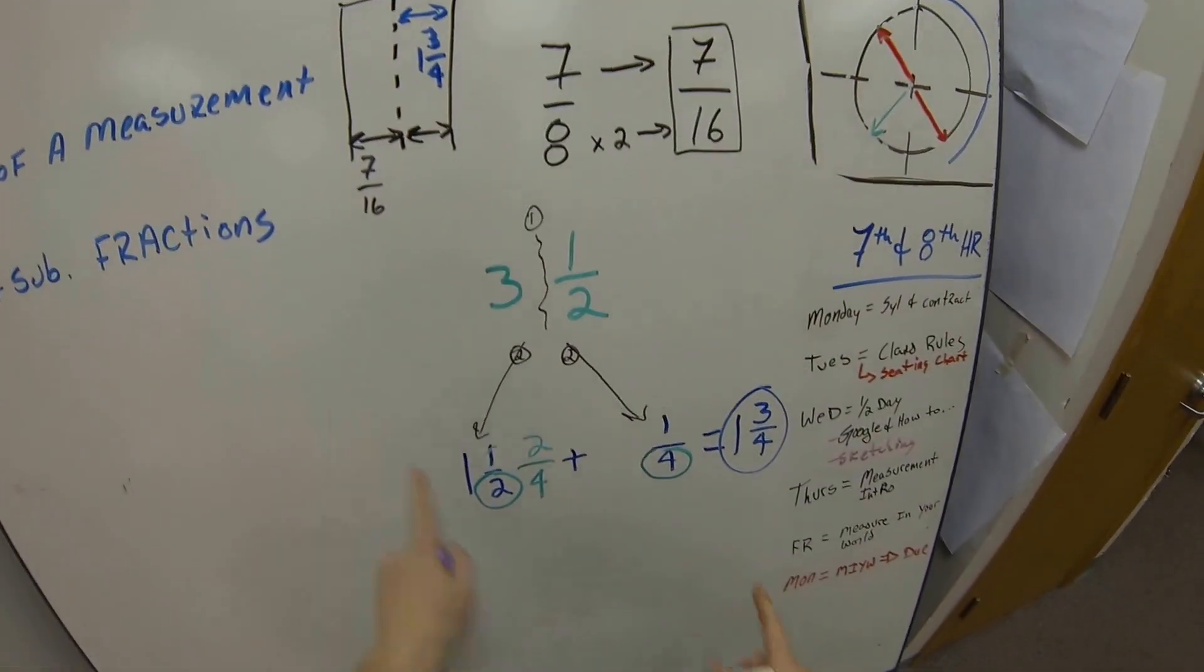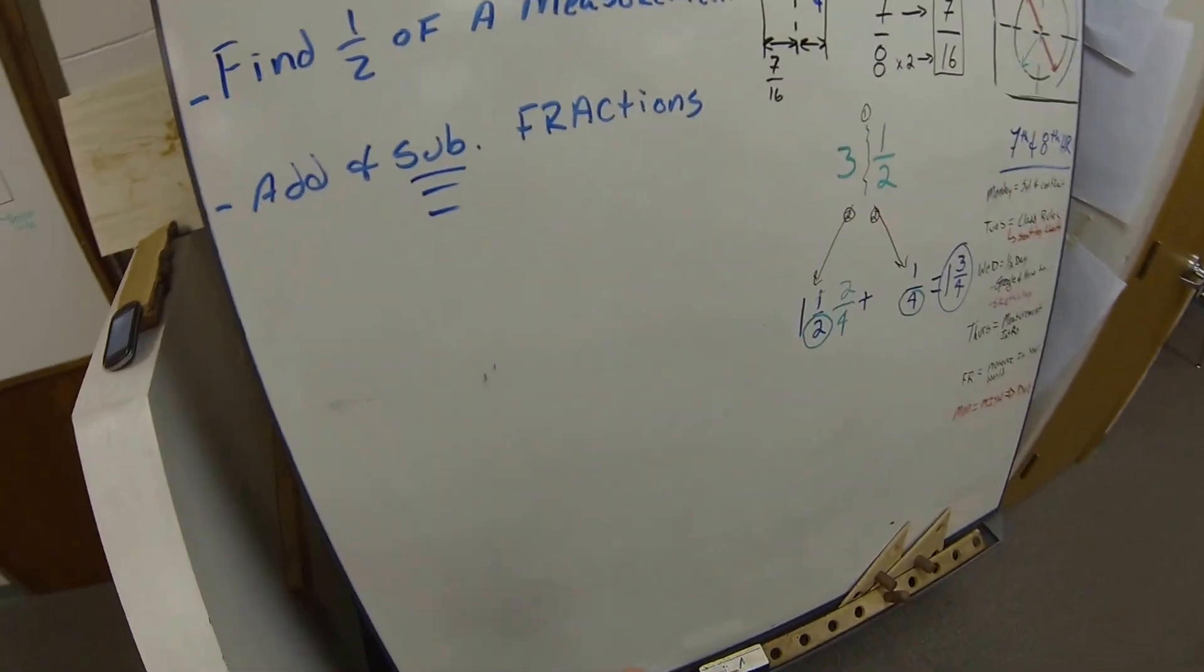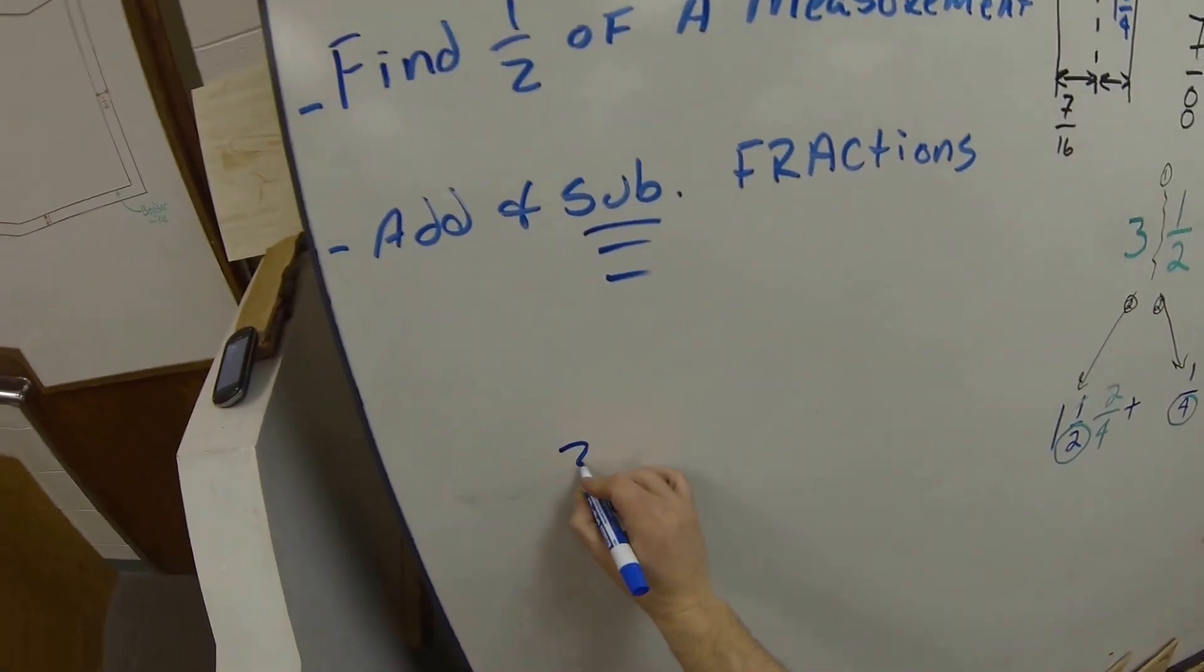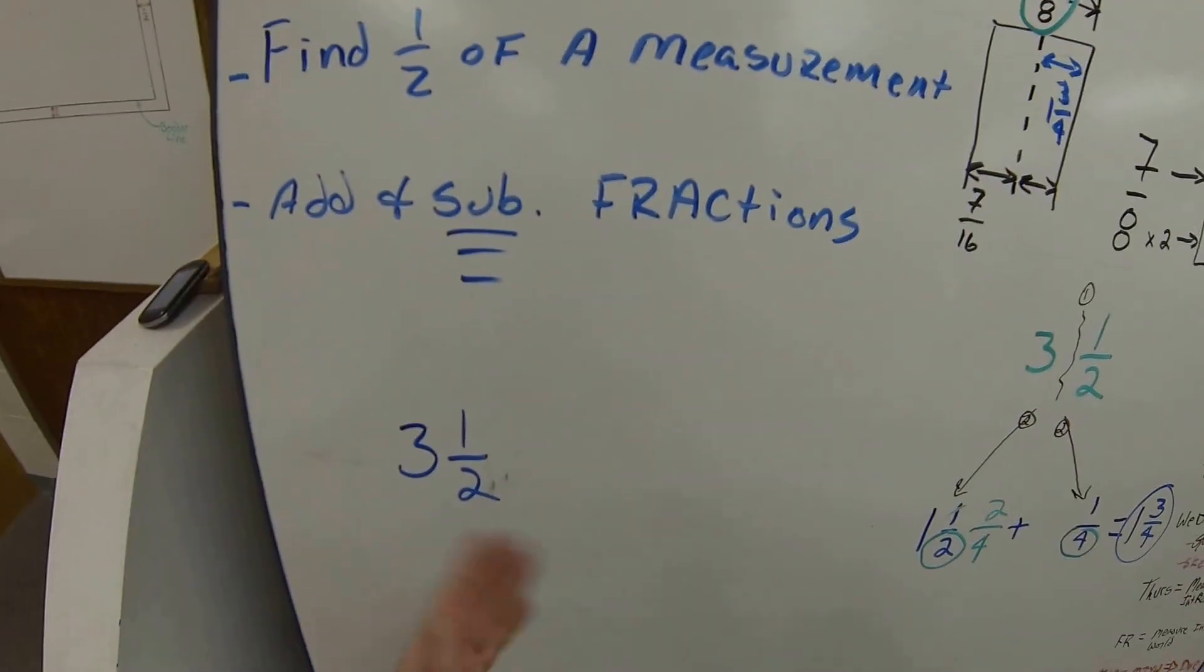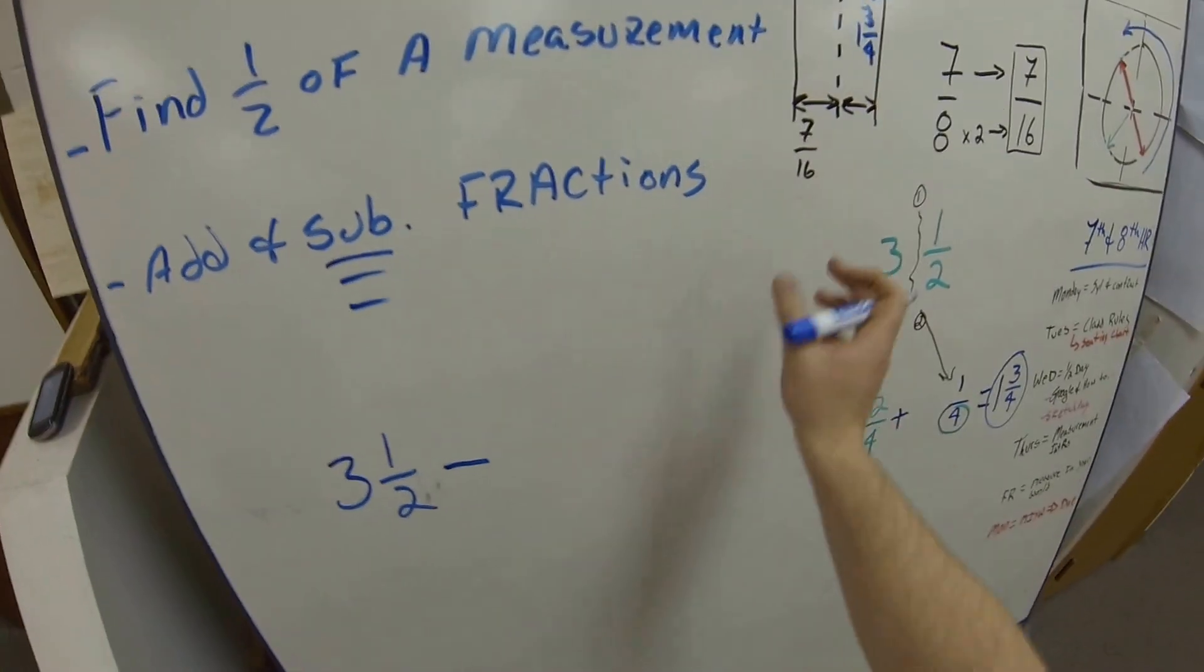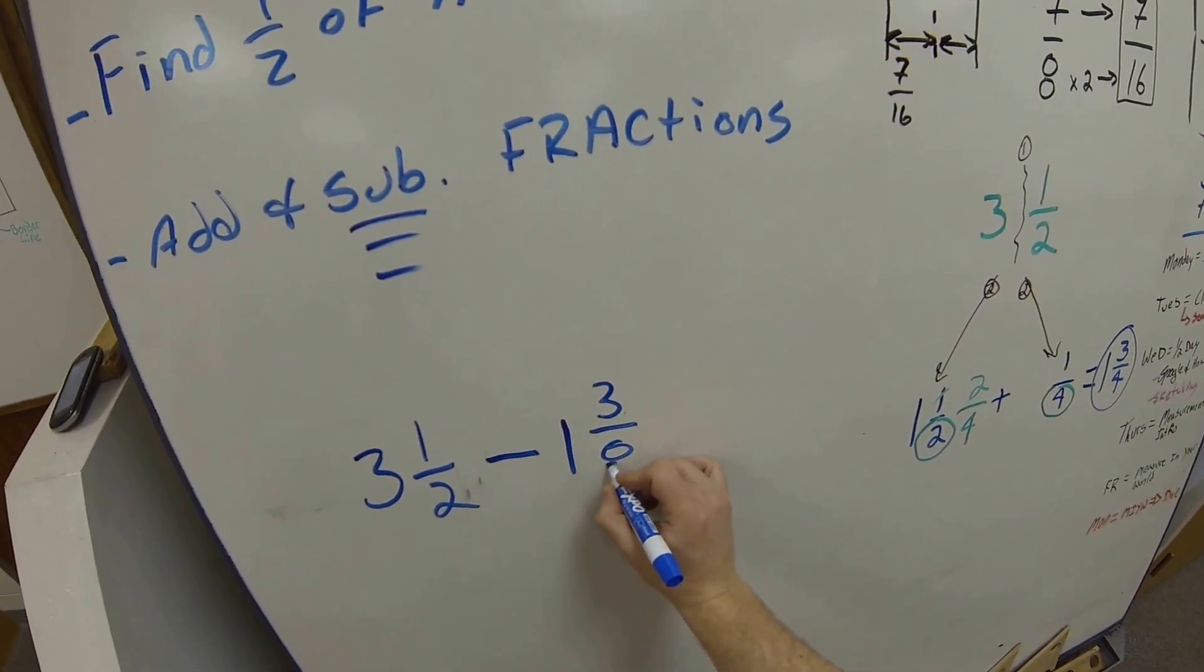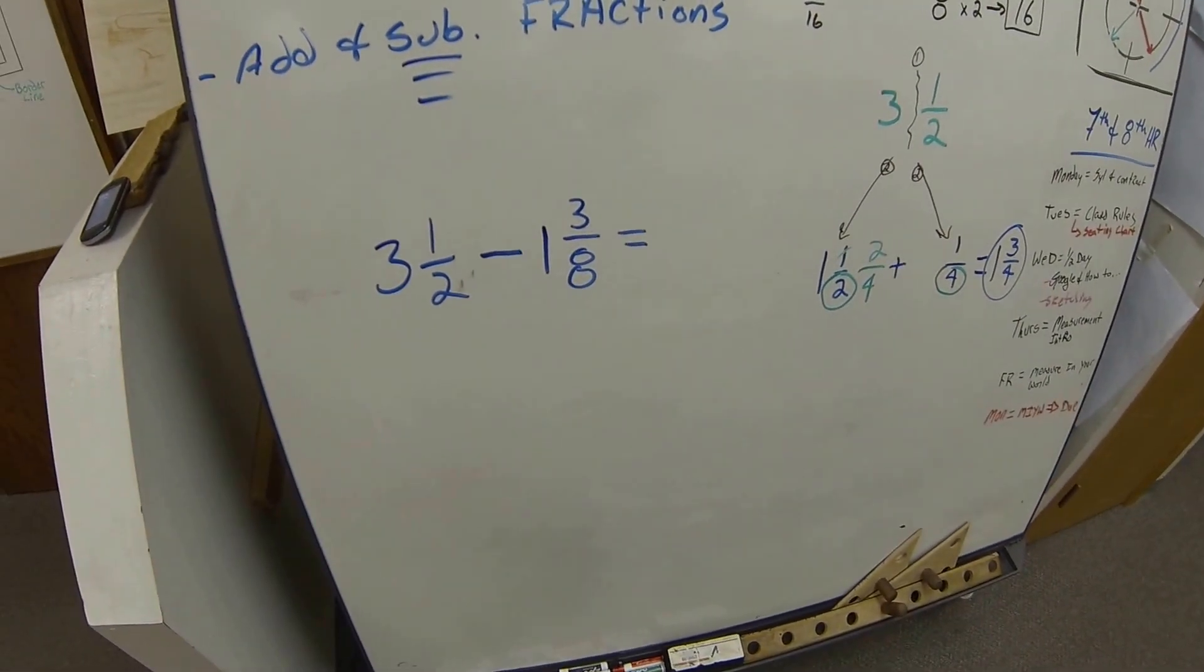Now we need to actually work on subtracting fractions. So we're going to give ourselves a measurement here. Let's say we had the same quantity, 3½, and we wanted to cut a section off a material. We're going to take off a little chunk here. Let's say we're going to cut off 1 and 3/8.